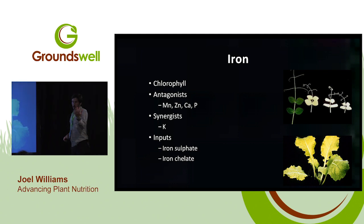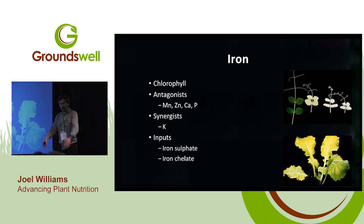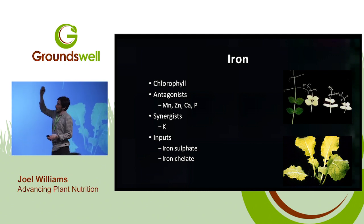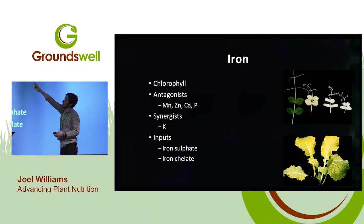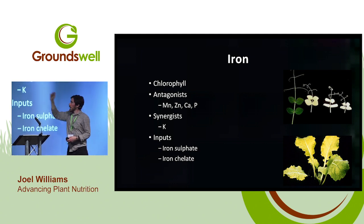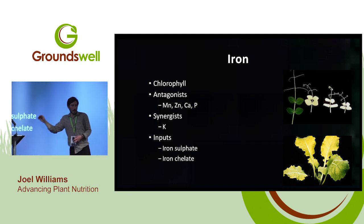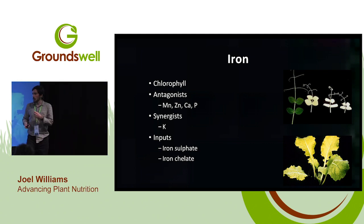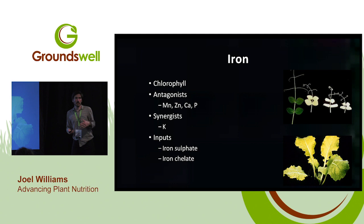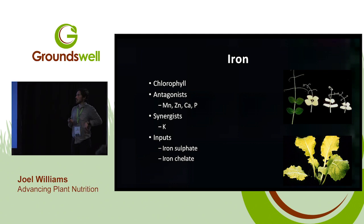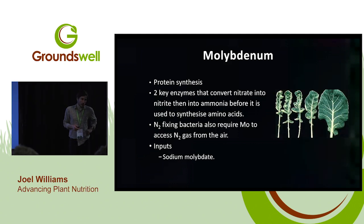Iron: its big claim to fame is chlorophyll — it's really important for the synthesis of that chlorophyll. Manganese and zinc shut down the availability of iron, as well as calcium and phosphorus. Potassium is a synergist. Iron sulphate works very well; iron chelates can also be a good option. Combining with fulvic acid is a very easy DIY chelator that really helps the utilisation of those minerals it's combined with.